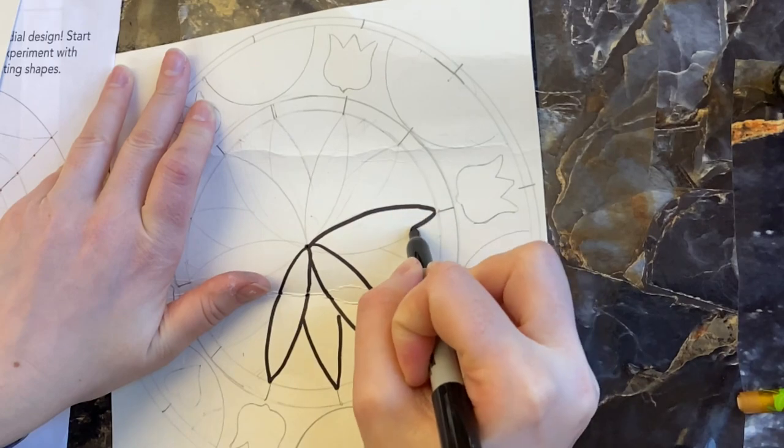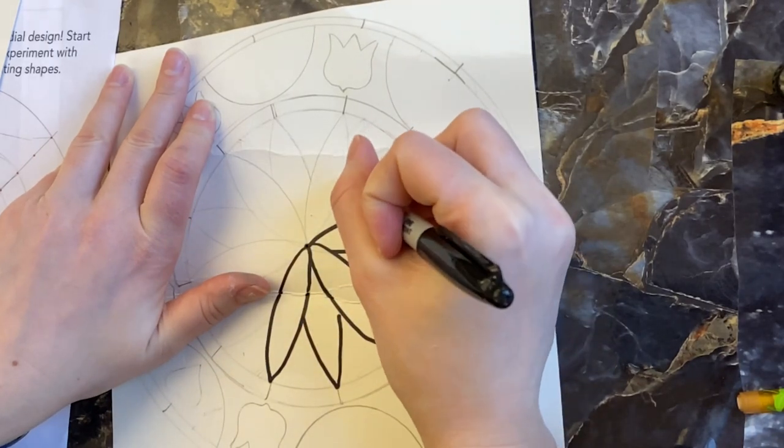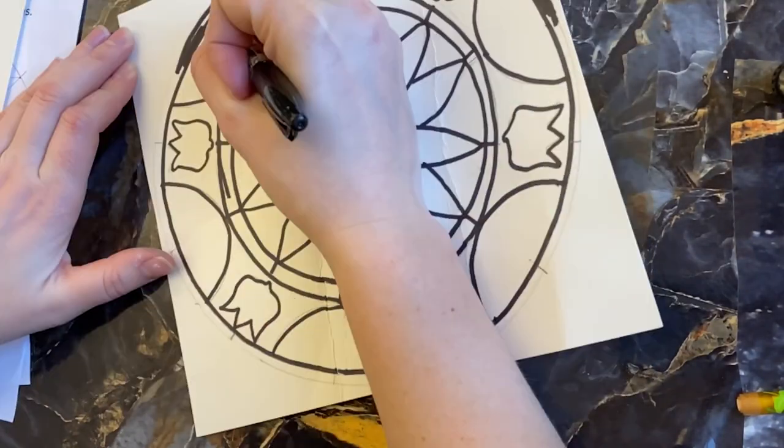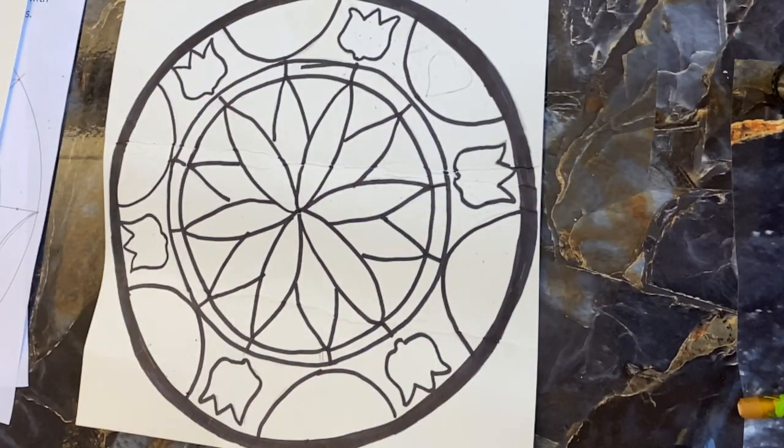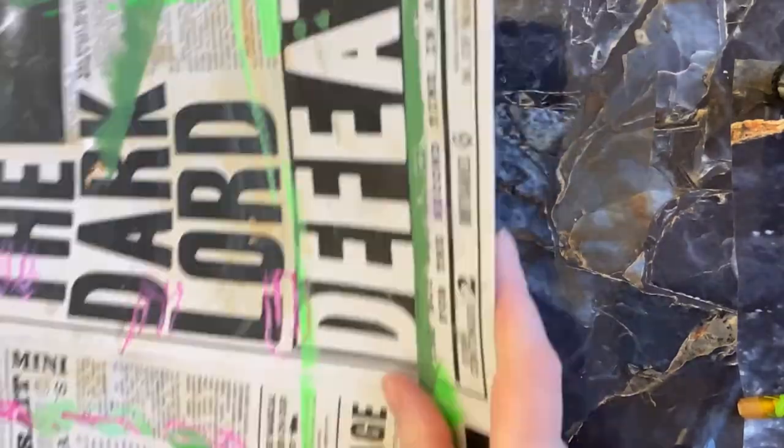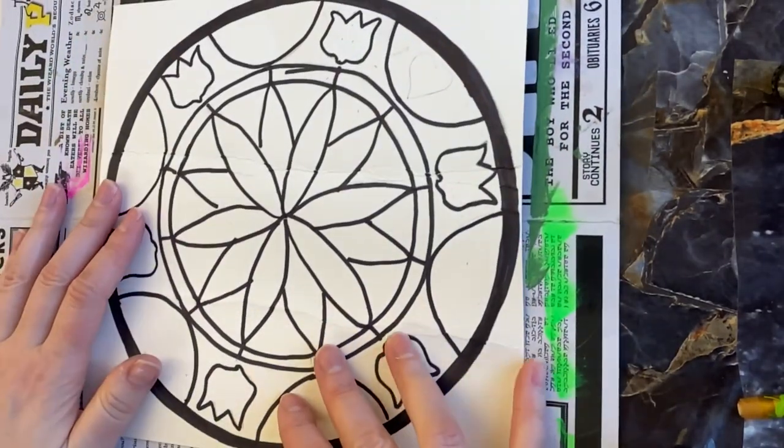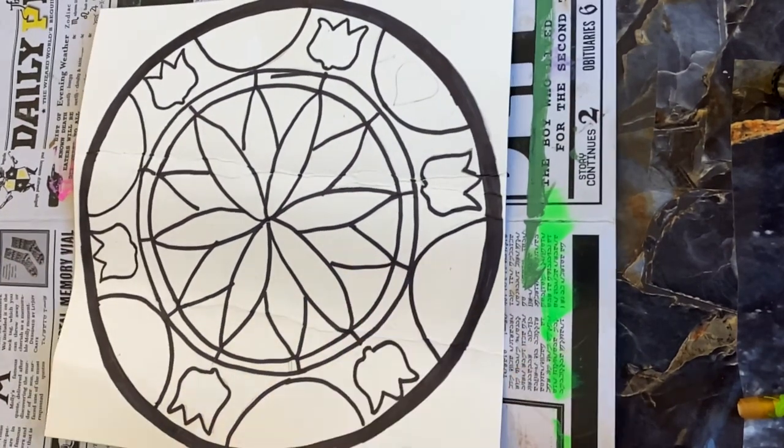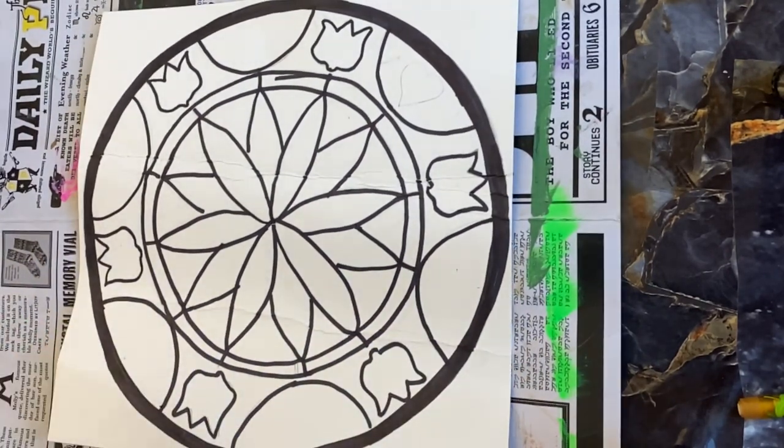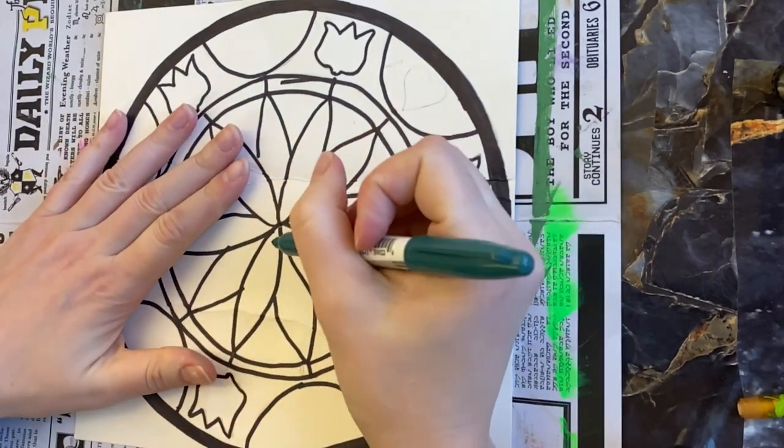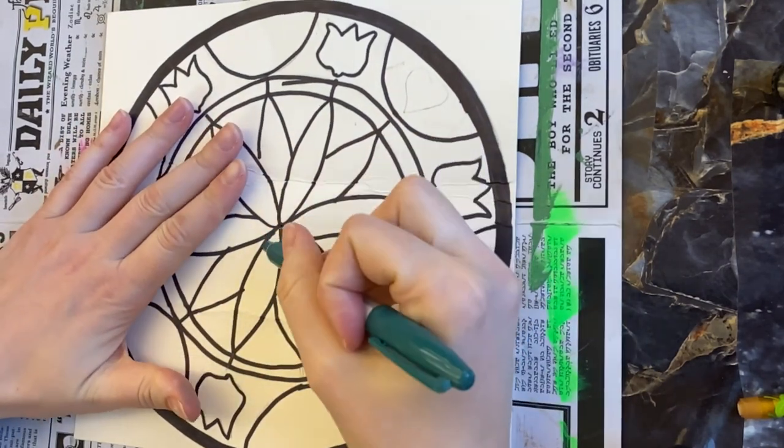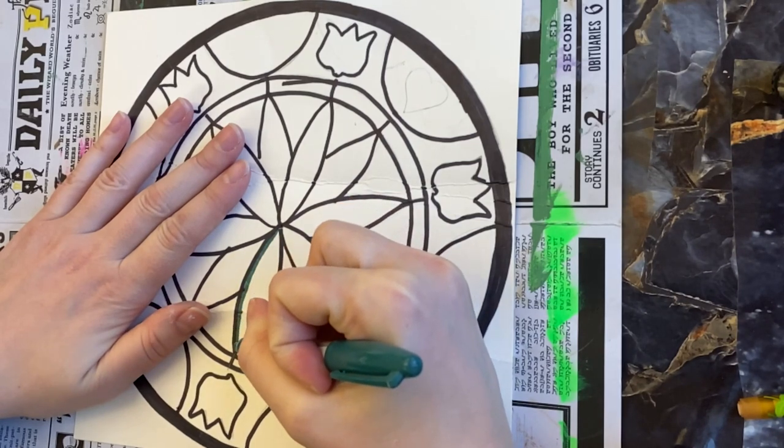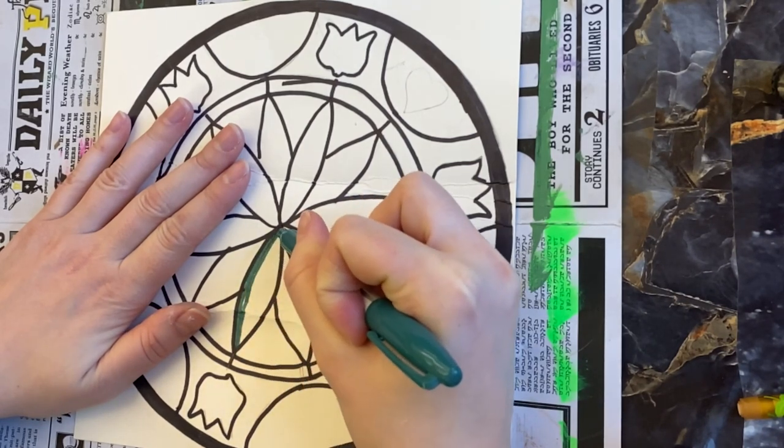Ready to color this in? I'm putting a mat underneath, not because it'll go through the paper, but just because I don't want to accidentally go out of my lines on the edges. We're using Sharpies to color this in. Color it however you'd like. Think about color choices that go well together. When coloring with a Sharpie, go in the same direction.